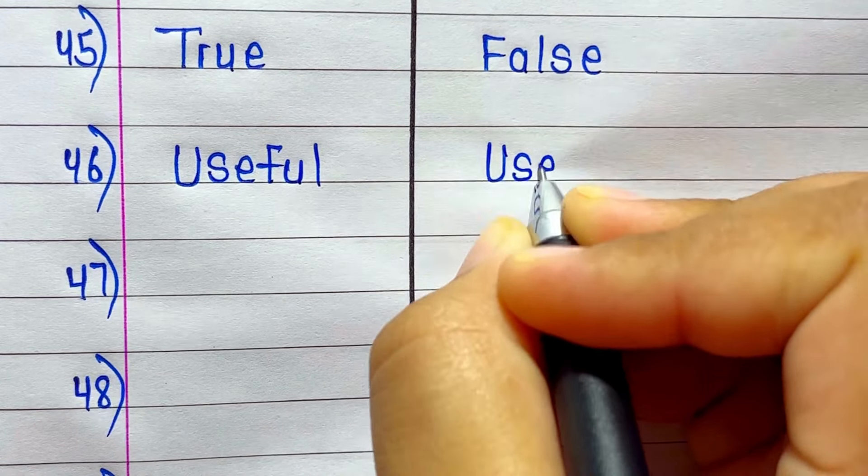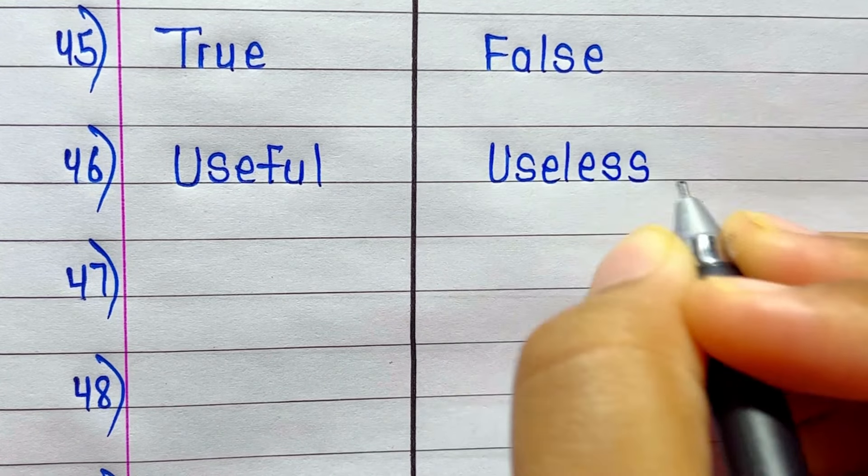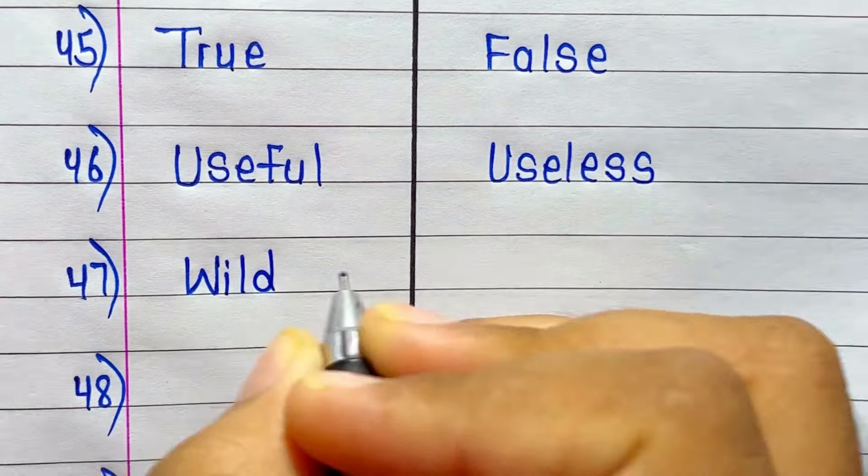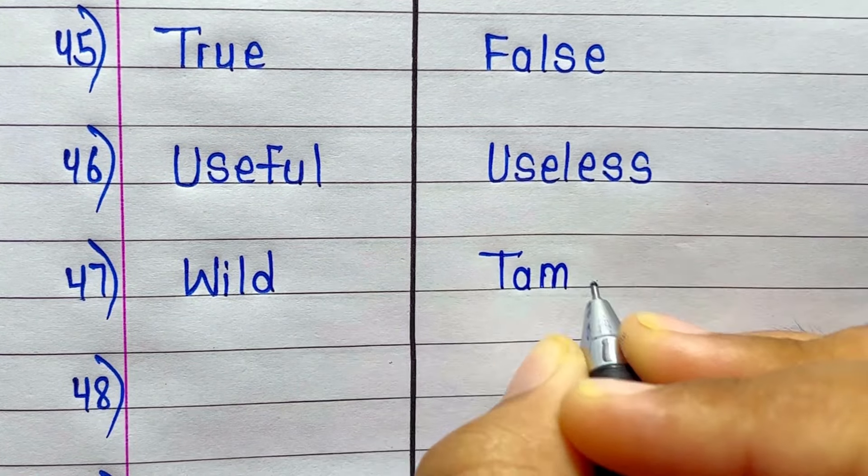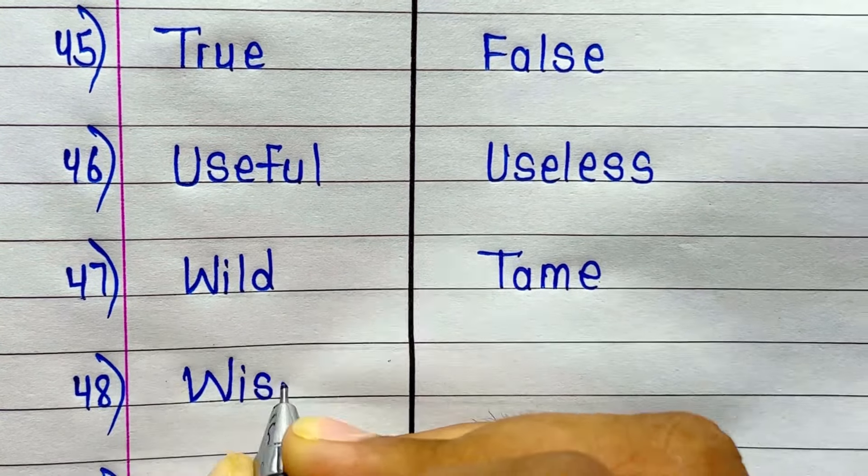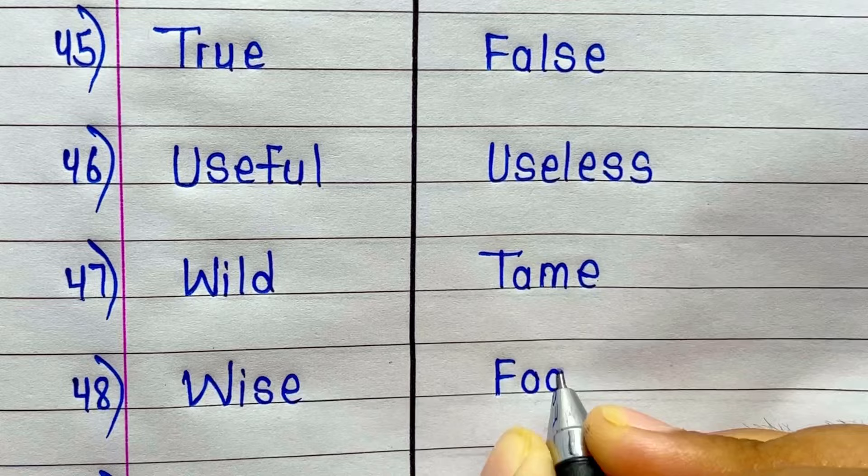Antonym of Useful is Useless. Antonym of Wild is Tame. Antonym of Wise is Foolish.